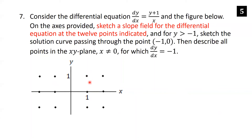For example, at (1, 0): (0+1)/1 = 1, giving a 45-degree slope. At (2, 1): (1+1)/2 = 1, also slope 1. When y = −1, the slope is 0 regardless of x (as long as x ≠ 0). When y = 0, slope is 1/x, so at x=1 slope is 1, at x=2 slope is 1/2, at x=−1 slope is −1, and at x=−2 slope is −1/2.